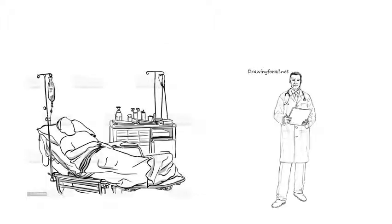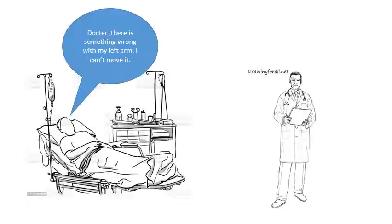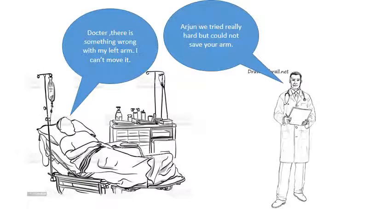He woke up in a hospital room. He felt as good as new, but he could not move his left arm. The doctor came in. He asked, Doctor, there is something wrong with my left arm. I can't move it. But he knew it even before the doctor said it. Arjun, we tried really hard but could not save your arm.